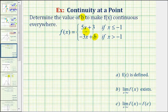Notice both function rules for this piecewise defined function are linear functions, which means the only place where this function could be discontinuous would be at x equals negative 1.